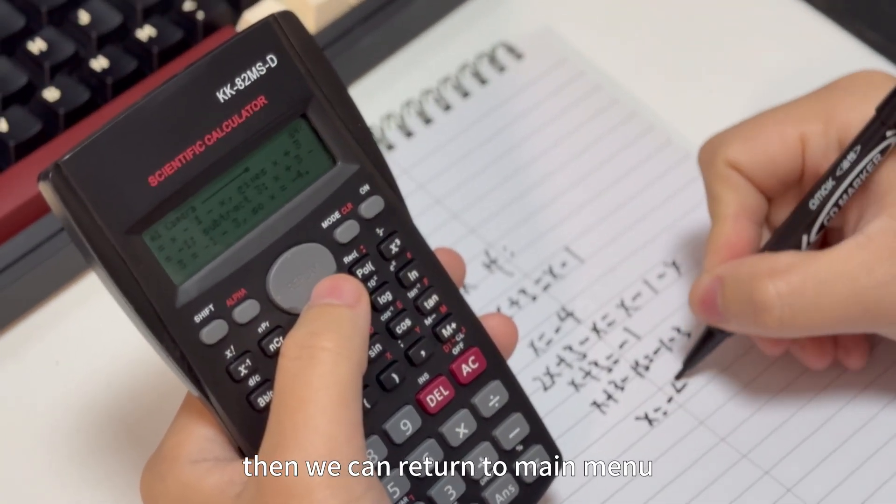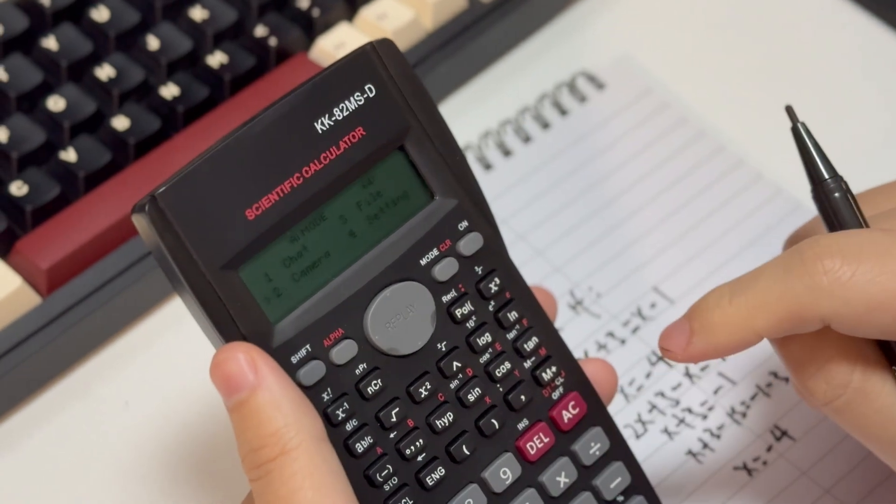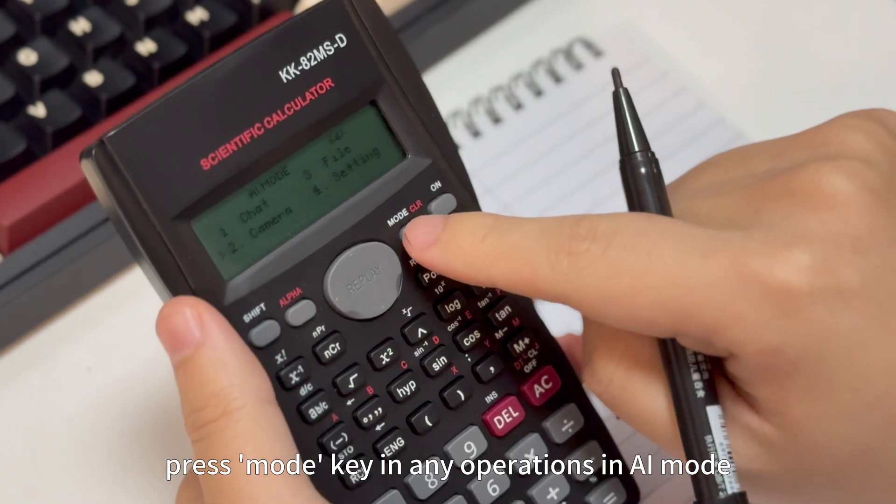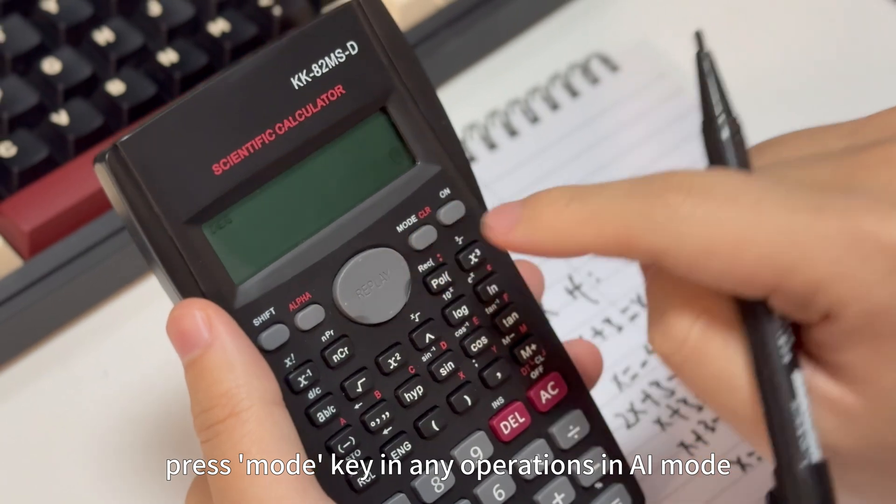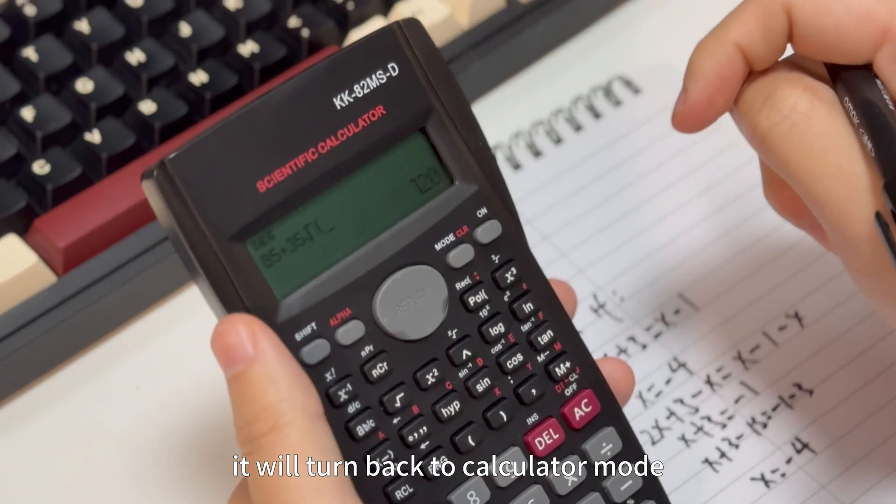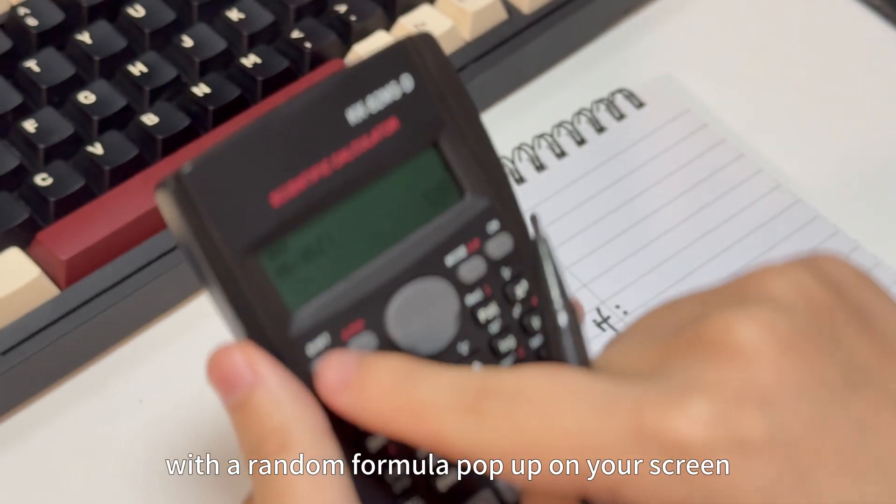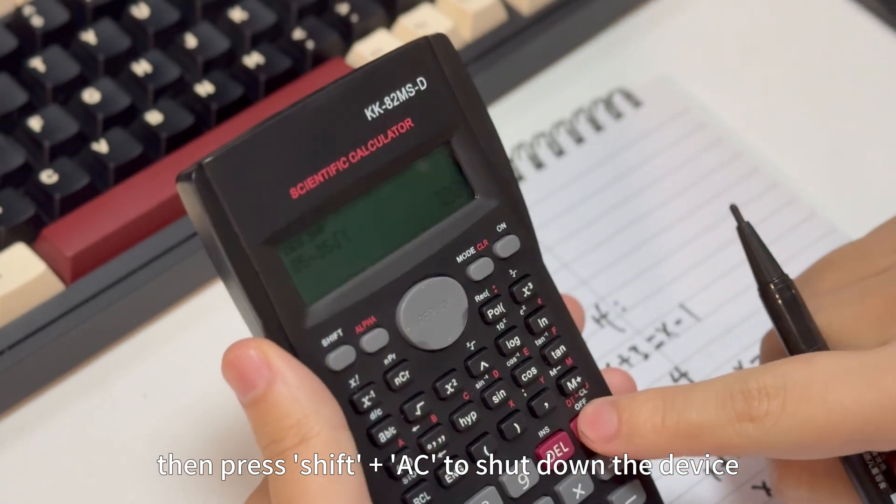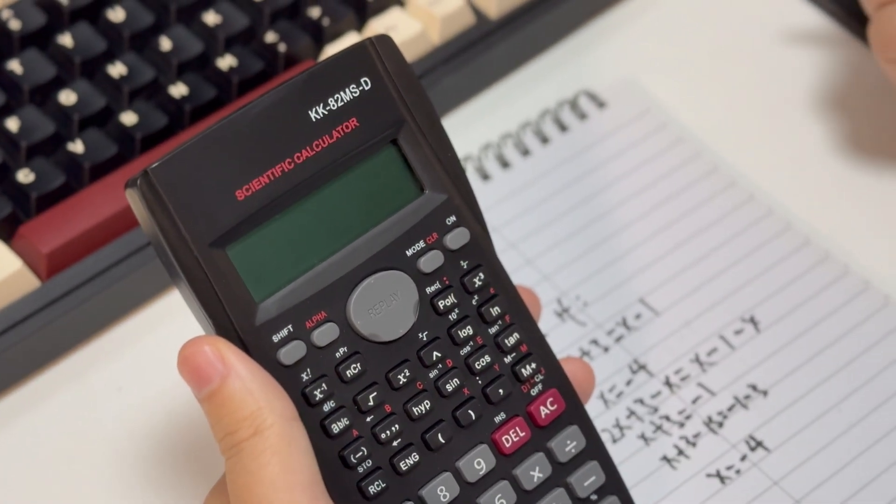Now we can return to main menu. Let's try the random formula functions. Press more key in any operations in AI mode. It will turn back to calculator mode with a random formula popup on your screen. Then press shift plus AC to shut down the device. Thanks for watching.